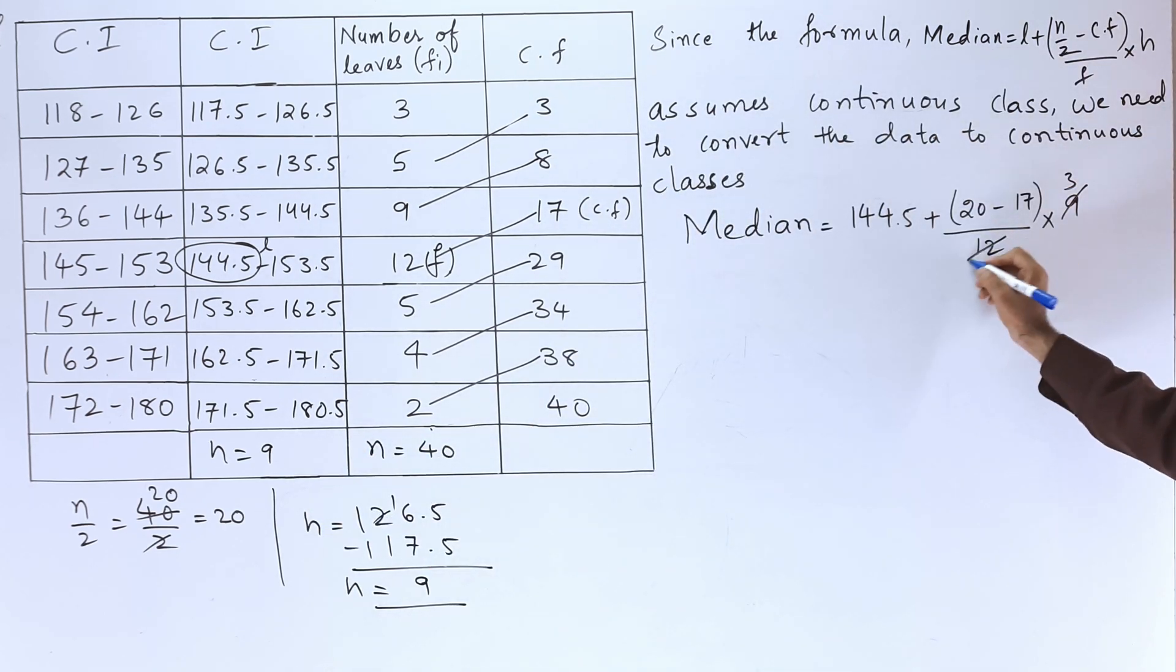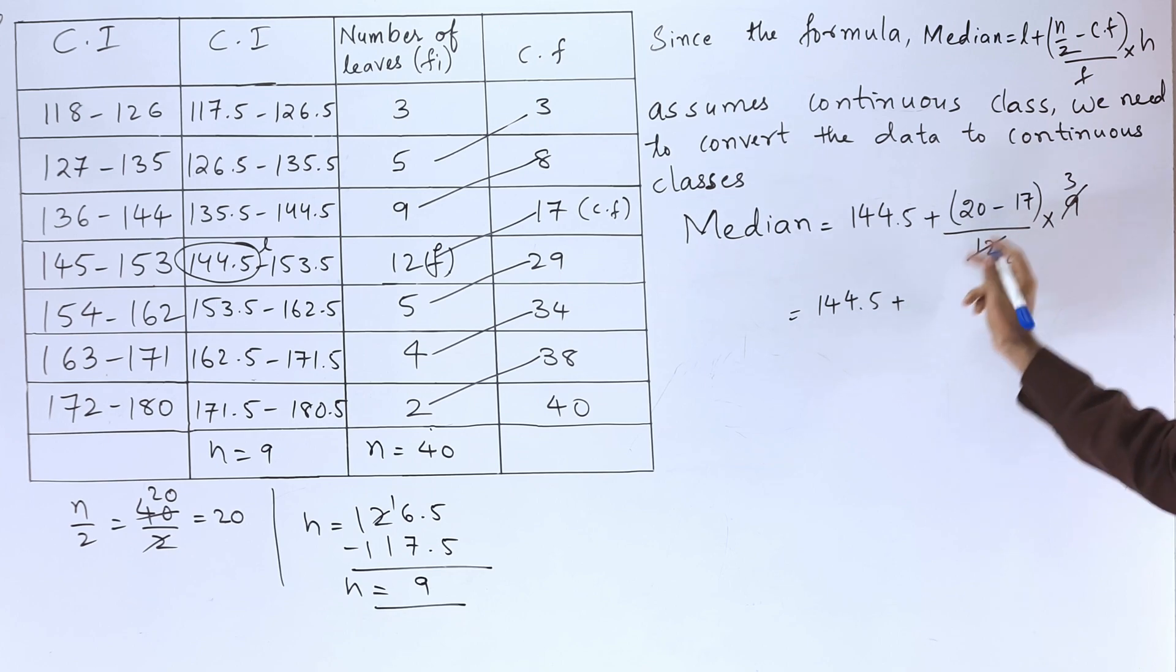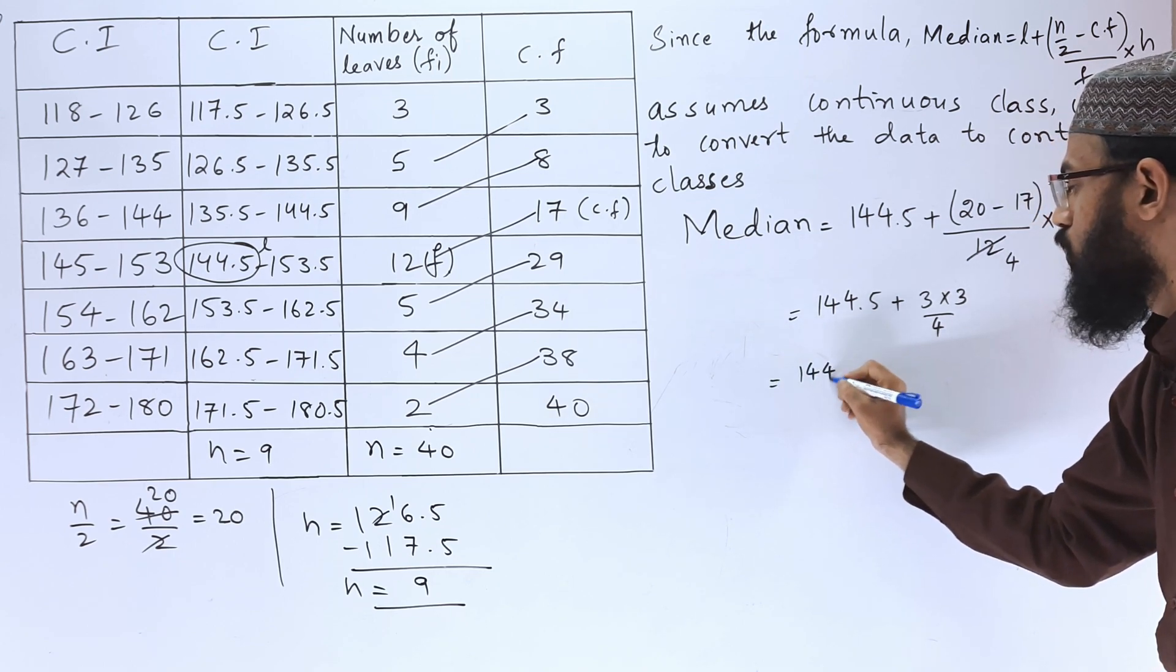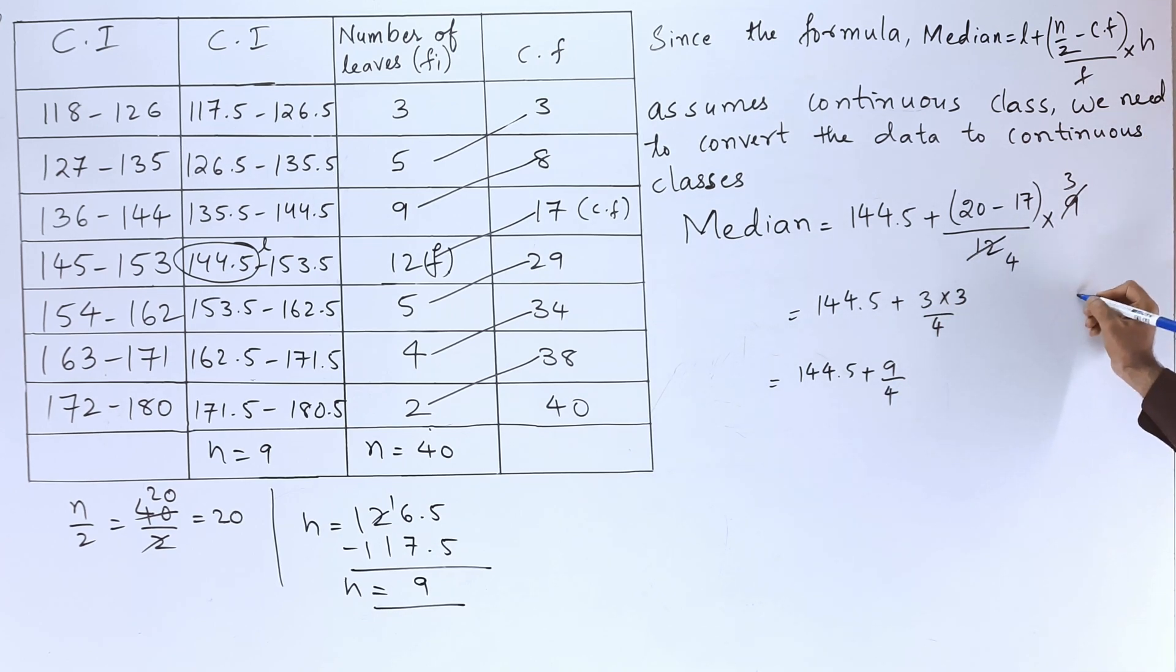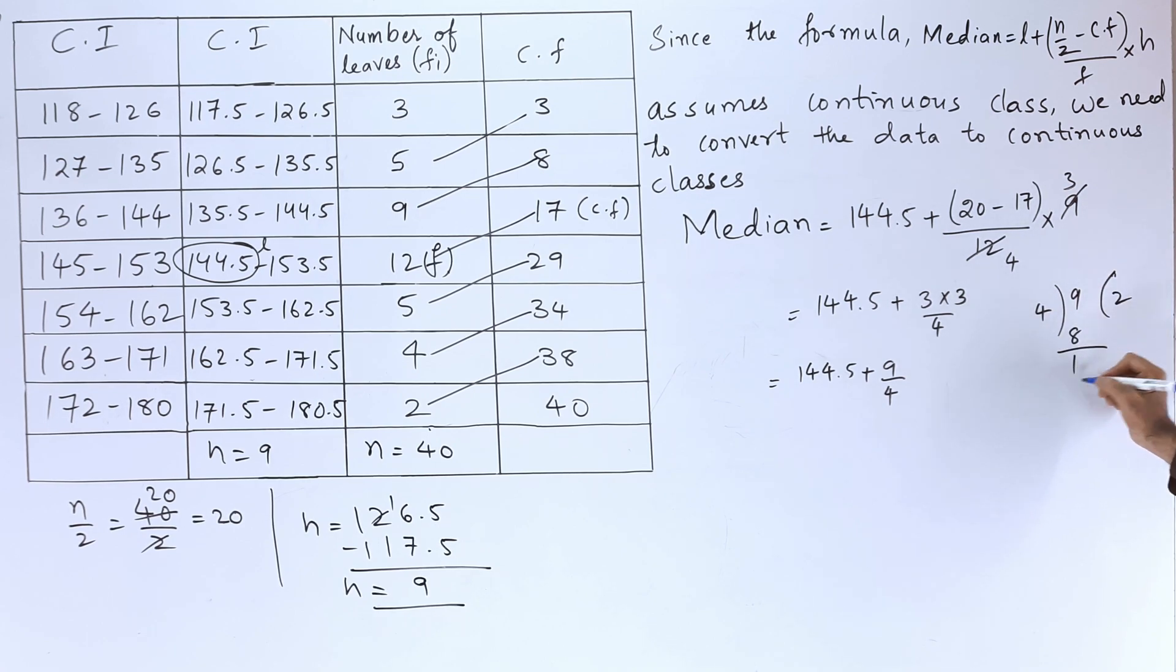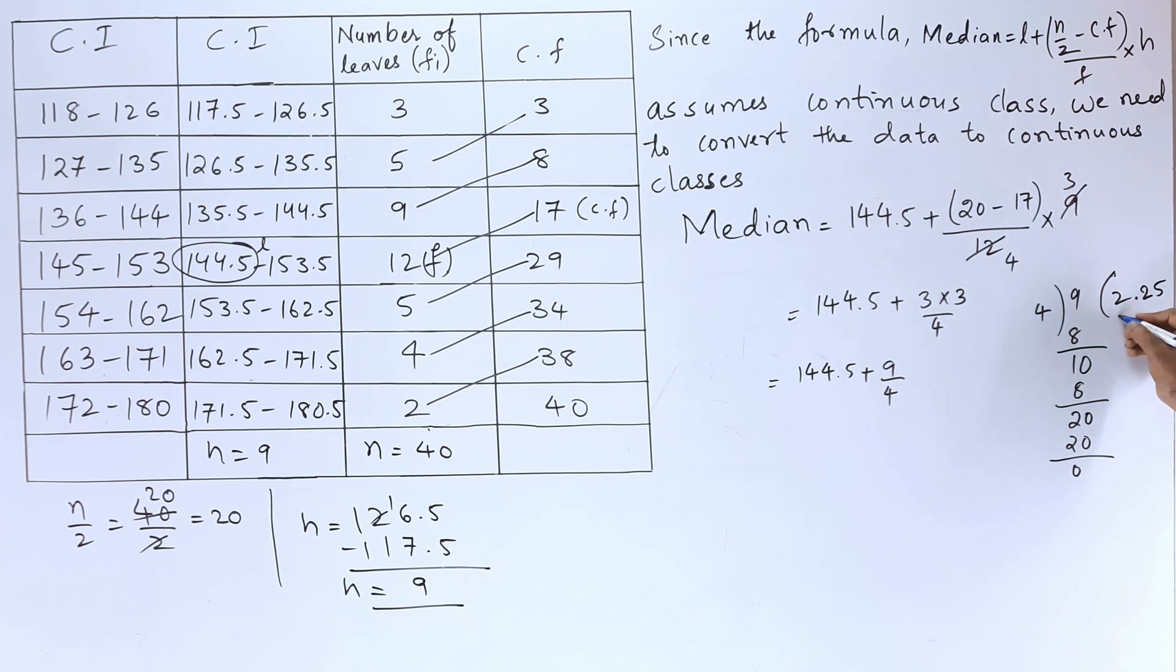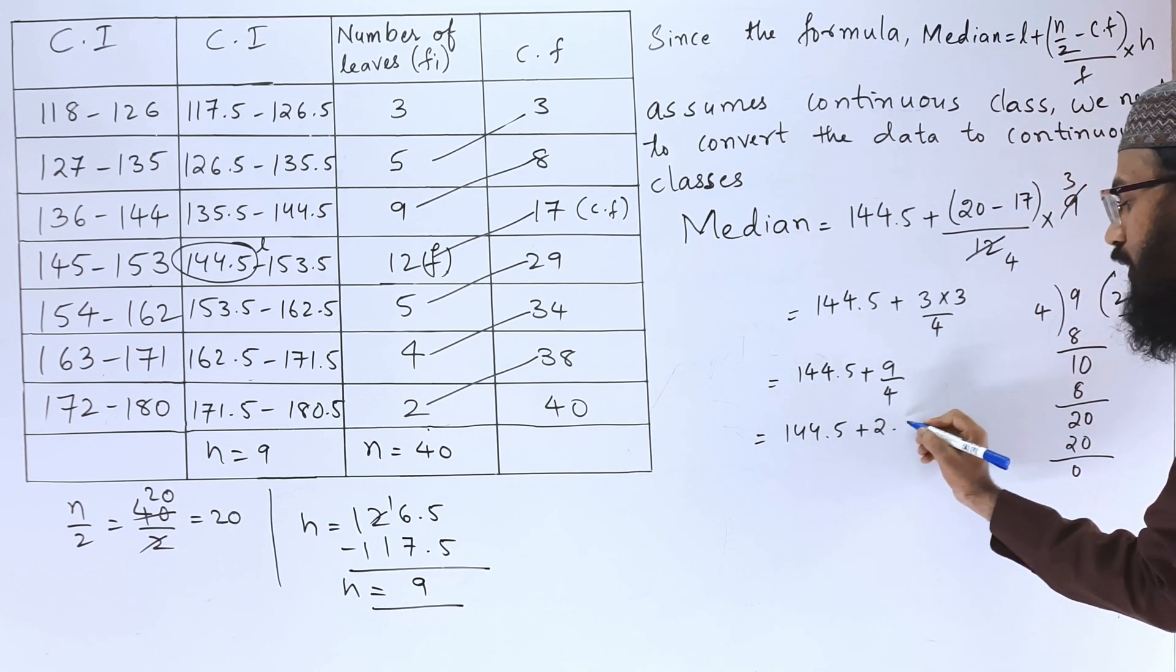144.5 plus 20 minus 17 is 3 into 3 by 4. So we get 144.5 plus 9 by 4. Let us divide it here, 9 divided by 4. 4 to the 8, 1 left, 4 to the 8, 2 left, so we have got the answer 2.25.